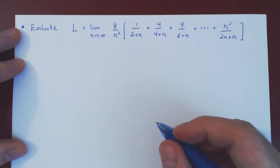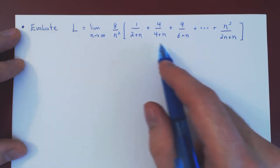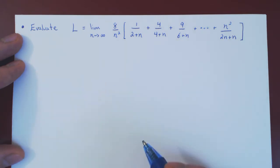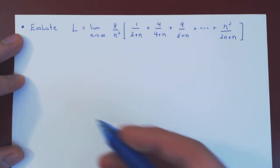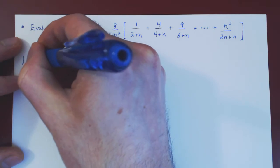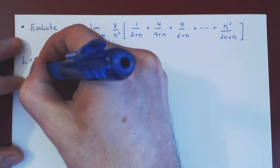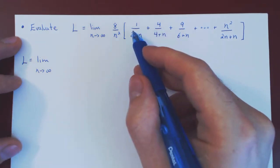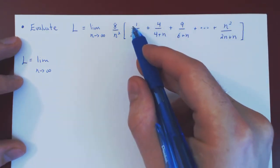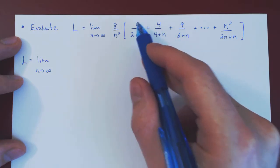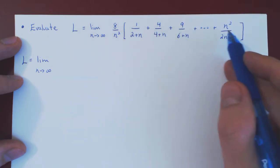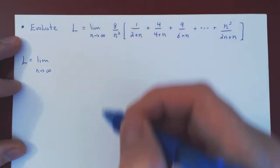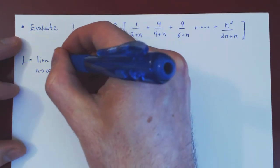So the limit as n goes to infinity of 8 over n squared times the sum 1 over 2 plus n plus 4 over 4 plus n plus 9 over 6 plus n plus all the way up to n squared over 2n plus n. Now this may look intimidating but the idea will be to rewrite this limit of a sum as a limit of a Riemann sum which will then become the definite integral of a function